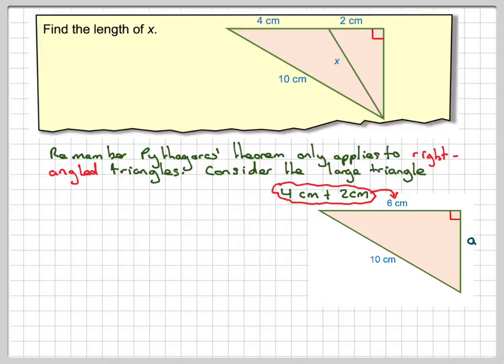Now, if you write this down, it's going to call this length here A. You can give it any letter that you want. We've got to find this length here first, and then once we've found this length here, we can find the value of x. Hence, this is a two-stage problem.